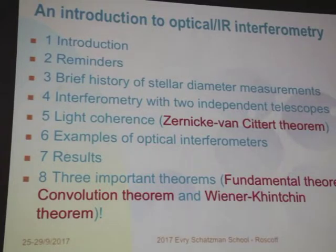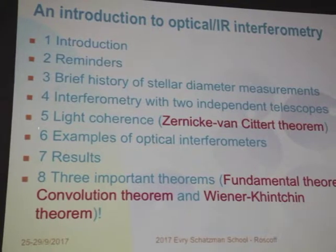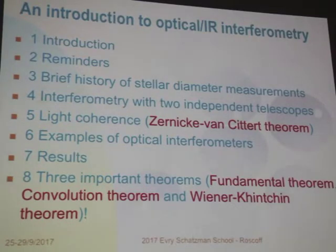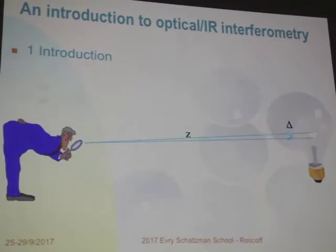I shall proceed with a few reminders, then a brief history of stellar diameter measurements, then introduce how an interferometer with two telescopes works. A very important part will be about the coherence of light — already presented by Franz — with the outcome being the Zernike-Van Cittert theorem. Then examples of optical interferometers, some results, and three important theorems — the convolution theorem is already presented.